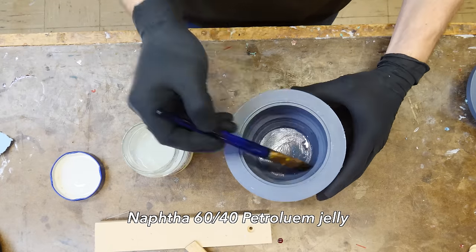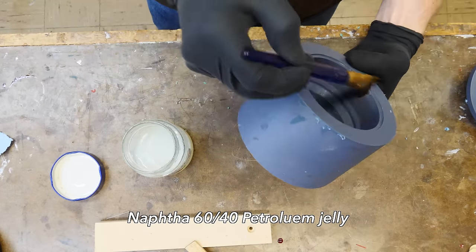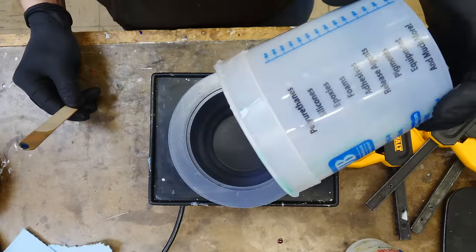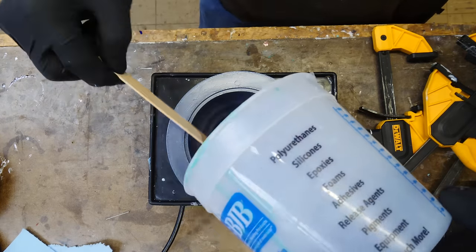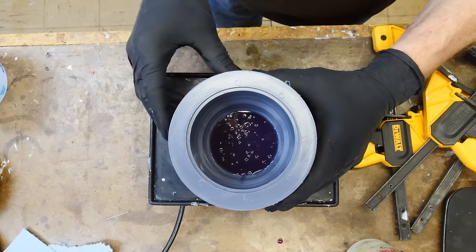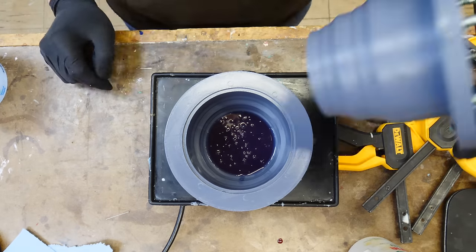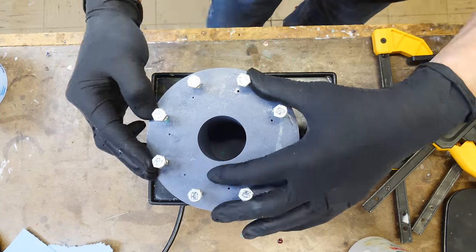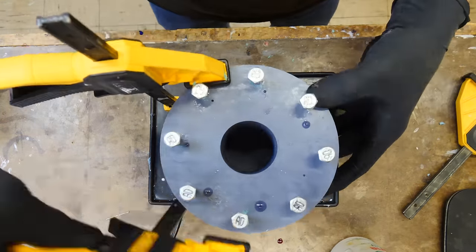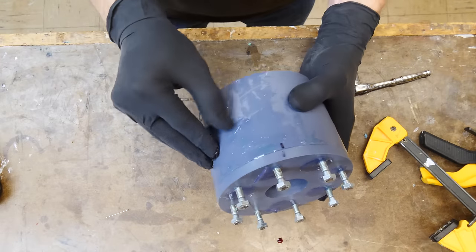Okay, let's try a different release agent. And this is naphtha and petroleum jelly, and this is what I use all the time on silicone. I never have an issue, so I know that this is going to work. Put the silicone in on top of the dental vibration tool again. There'll be a link for that below. Super helpful for floating air bubbles out of silicone.